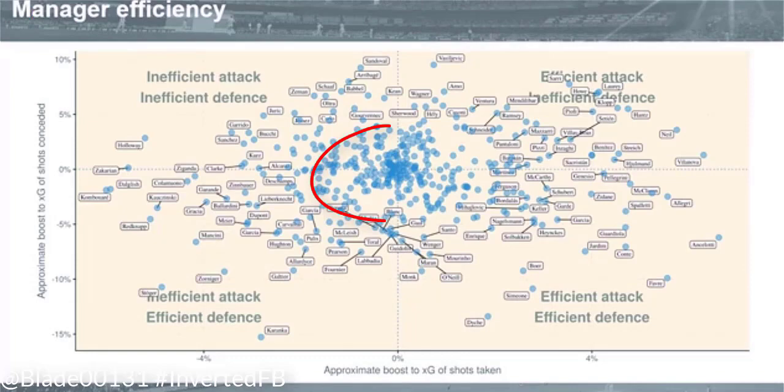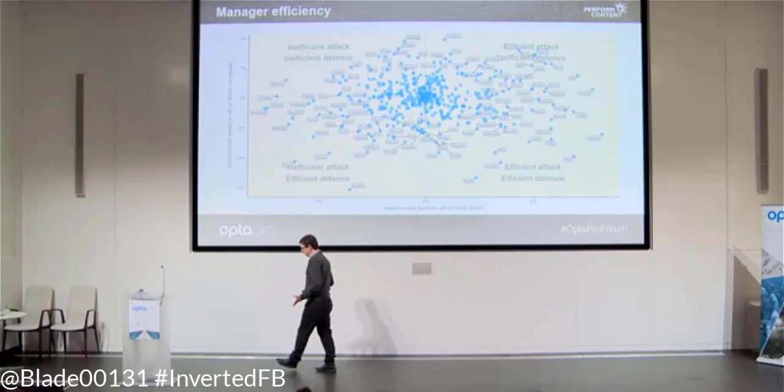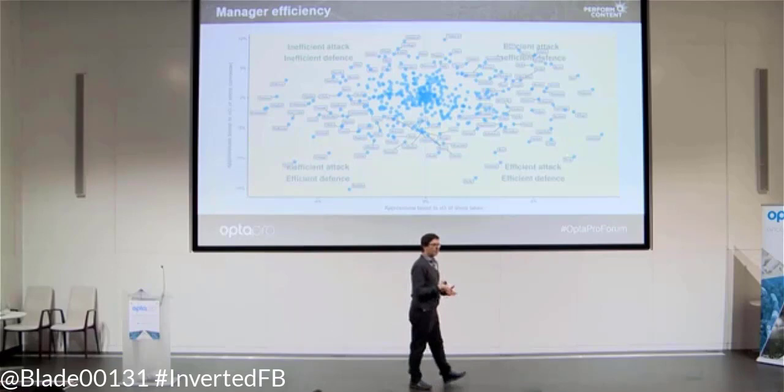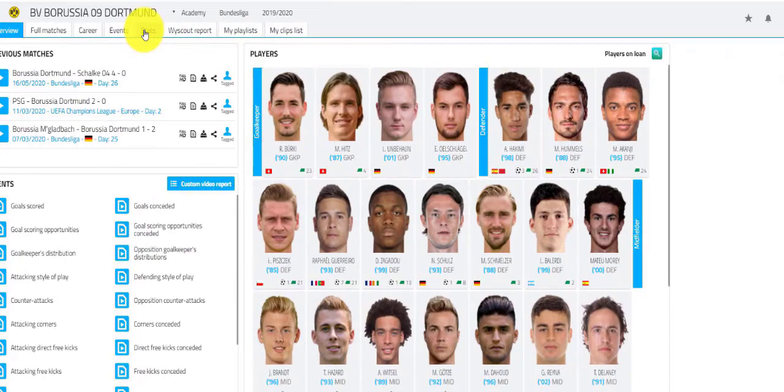These are the managers that the model thinks are average — they concede as many goals as expected goals and score as many as they produce. The best managers increase the XG of chances they produce and decrease the XG of chances they concede. Overall, the best manager is Lucien Favre, something that has been known in the stats community for a while.